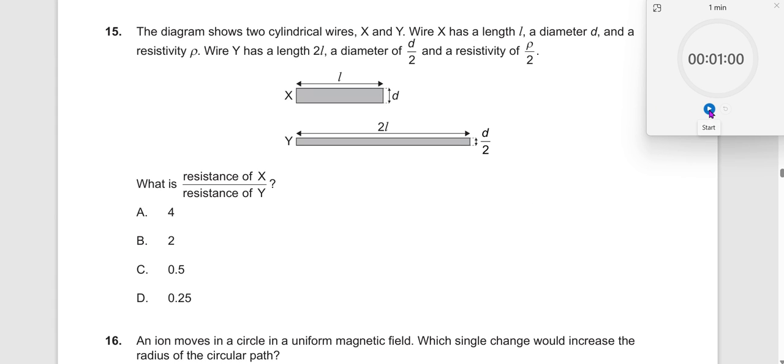Okay, let us do the 15th problem. This might take some time. The diagram shows two cylindrical wires, X and Y. Wire X has a length L, diameter D, and resistivity ρ. Wire Y has length 2L, diameter D/2, and resistivity ρ/2. So what I will do is convert diameter D to radius R, and this will be radius R/2.